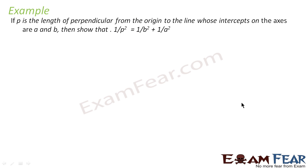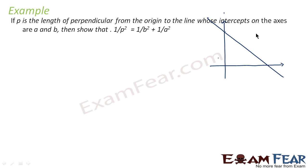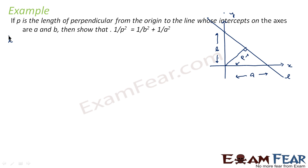The next problem says: if P is the length of the perpendicular from the origin to the line whose intercepts on the axes are a and b, we have to show that 1/p² = 1/a² + 1/b². The x-intercept is a and the y-intercept is b, and P is the perpendicular distance from the origin to the line. The equation of line l is x/a + y/b = 1.